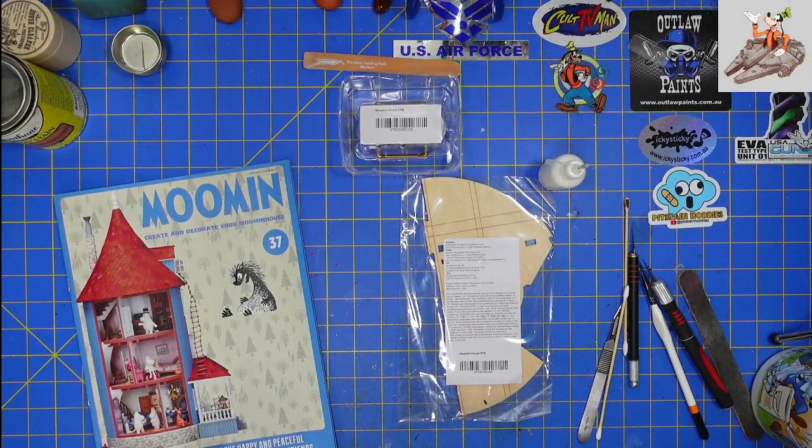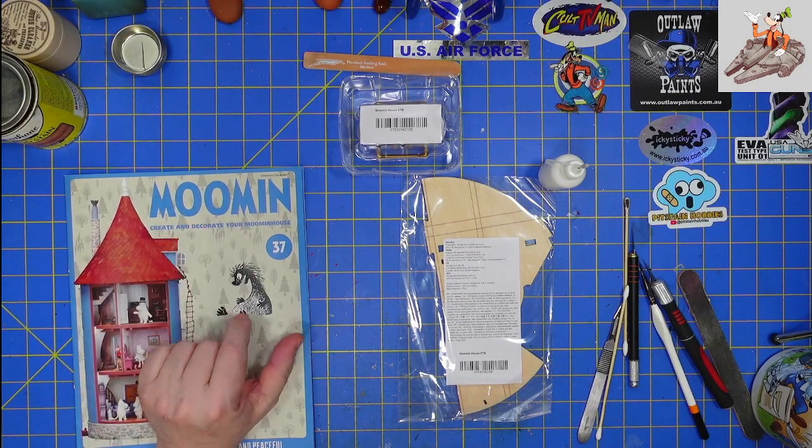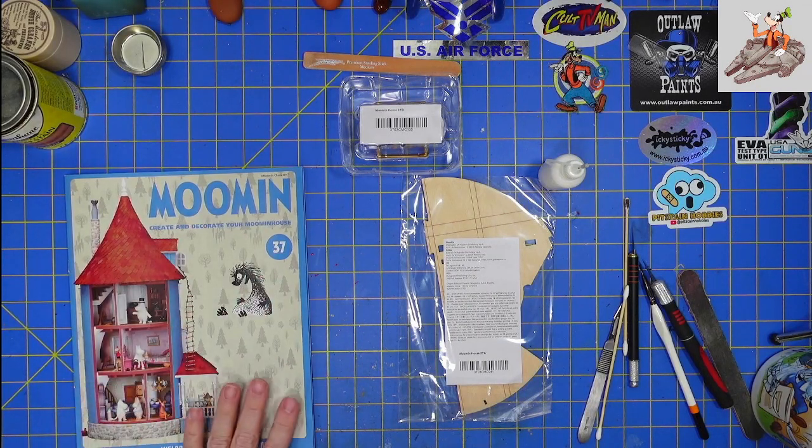Hello and welcome to Buckman's Model Mania. Today we're going to be working on the Moomin House, stage 37 from D'Agostini.